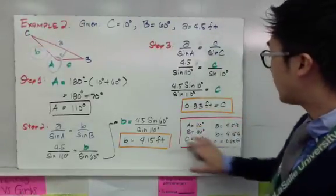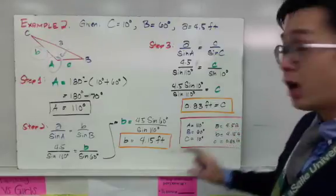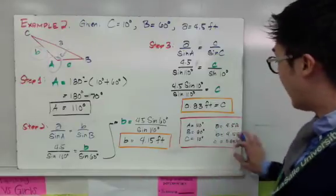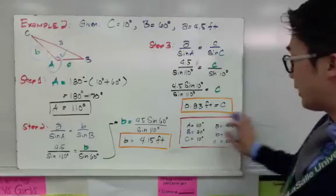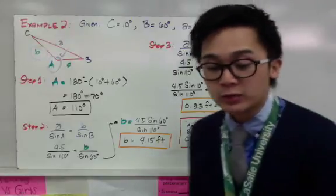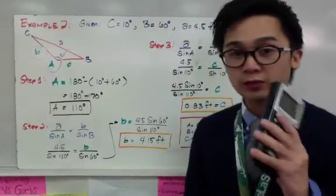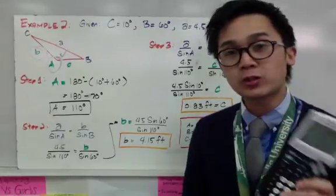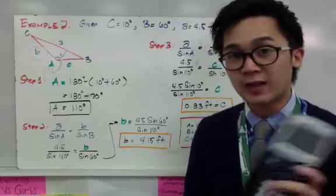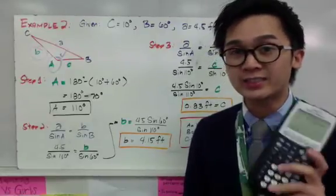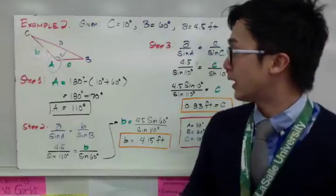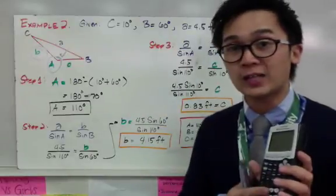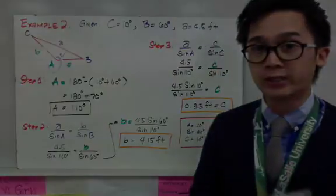Now I have my complete set of parts for this oblique triangle — all angles and all sides. Using the law of sines, you just need your graphing calculator or scientific calculator. Make sure your calculator is set to degree mode to find the actual values of the angles and sides you're looking for.